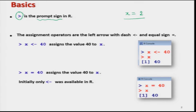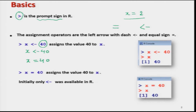When R was first started, the initial assignment operator was not the equality sign but the less-than and hyphen sign. So in older versions of R, to assign a value you had to write less-than hyphen. For example, to assign 40 to x you would write x less-than hyphen 40. But in recent versions of R, the equality sign is also accepted. So either x equal to 40 or x less-than hyphen 40 are both acceptable.